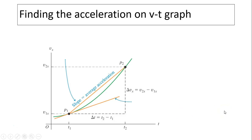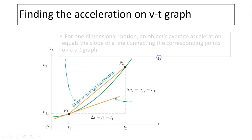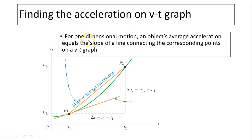Finding acceleration on a VT graph. On the VT graph, to find average acceleration between point 1 and point 2, we draw a slope — a straight line. This slope equals the average acceleration. For one-dimensional motion, an object's average acceleration equals the slope of the line connecting the corresponding points on the VT graph.